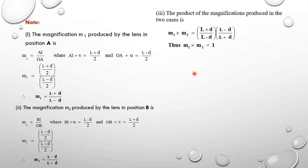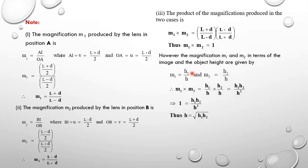Considering image heights: M1 equals H1 over H and M2 equals H2 over H, and since M1 times M2 equals 1, we have H1 times H2 over H squared equals 1. Therefore H equals the square root of H1 times H2, where H1 and H2 are the image heights for the two positions and H is the object height.